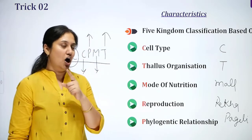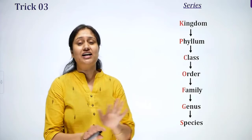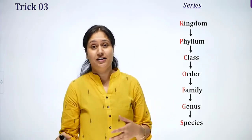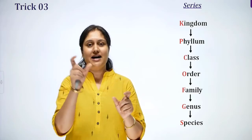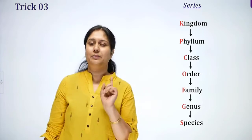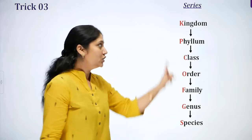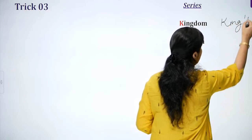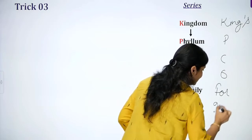Another trick we have is for series-based learning. Sometimes many things are mentioned in a series, like the male reproductive organs — a common AIMS question — where you need to know which body part comes after which. So we can learn from a series trick. I will take the example of the 7 Obligate Categories in taxonomy.